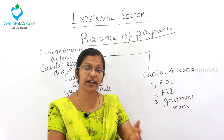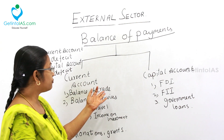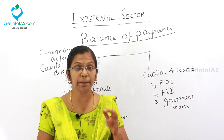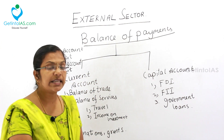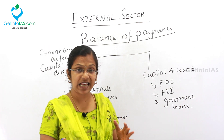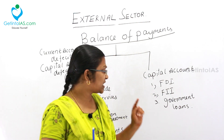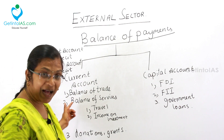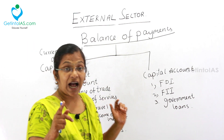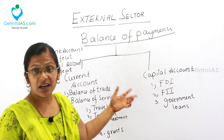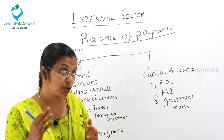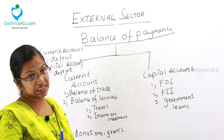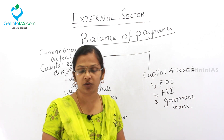Trade deficit is simply the balance of trade — when the export of goods is lesser than the import of goods. In exams, questions may ask about FII, FDI, balance of trade, or balance of services. Balance of payment is not just goods and services — it includes all economic transactions, including donations, grants, and government loans.